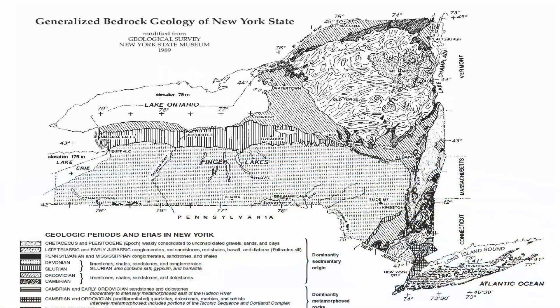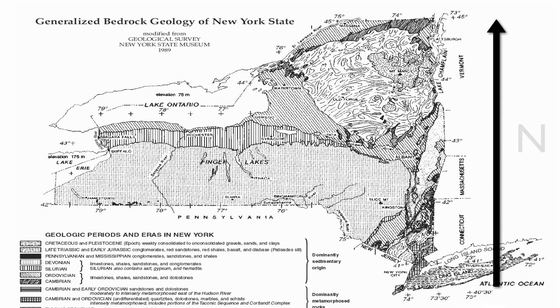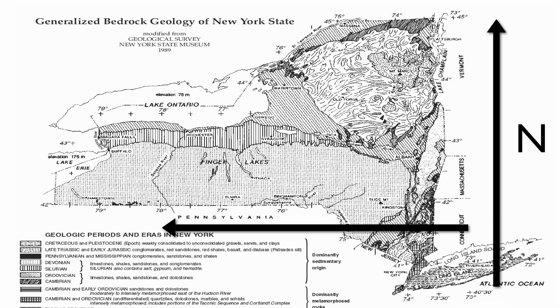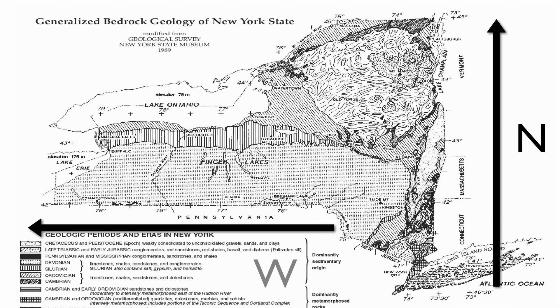This map has a lot of information on it, but the only piece we're going to focus on is going to be your latitude and longitude. Latitude's always going to be north of the equator and longitude's always going to be west of the prime meridian.